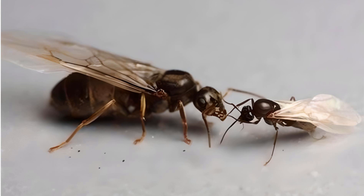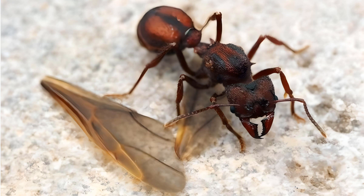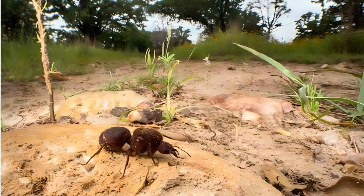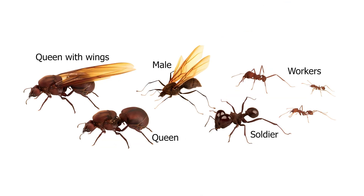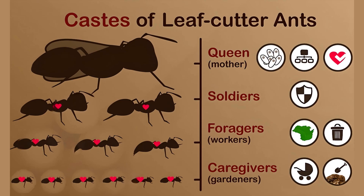The female returns to the ground, loses her wings, and searches for a suitable underground lair in which to found her colony. The success rate of these young queens is very low — only 2.5 percent will go on to establish a long-lived colony. To start her own fungus garden, the queen stores bits of the parental fungus garden mycelium within her oral cavity.